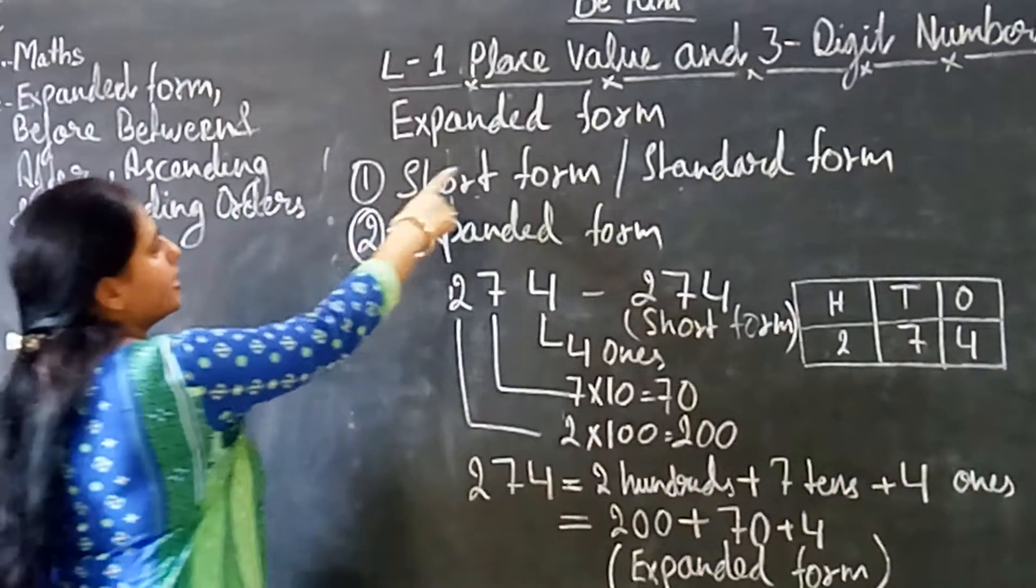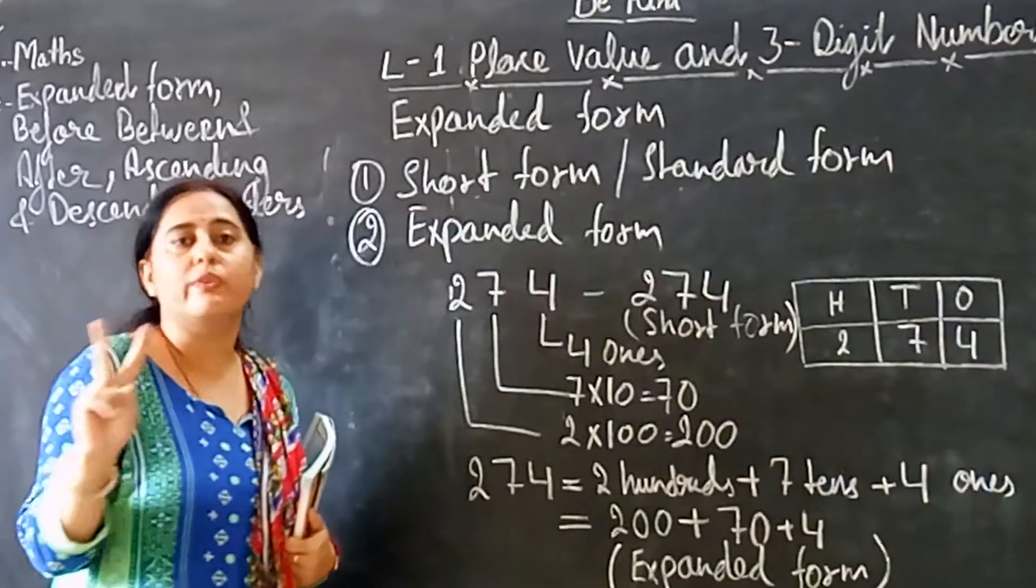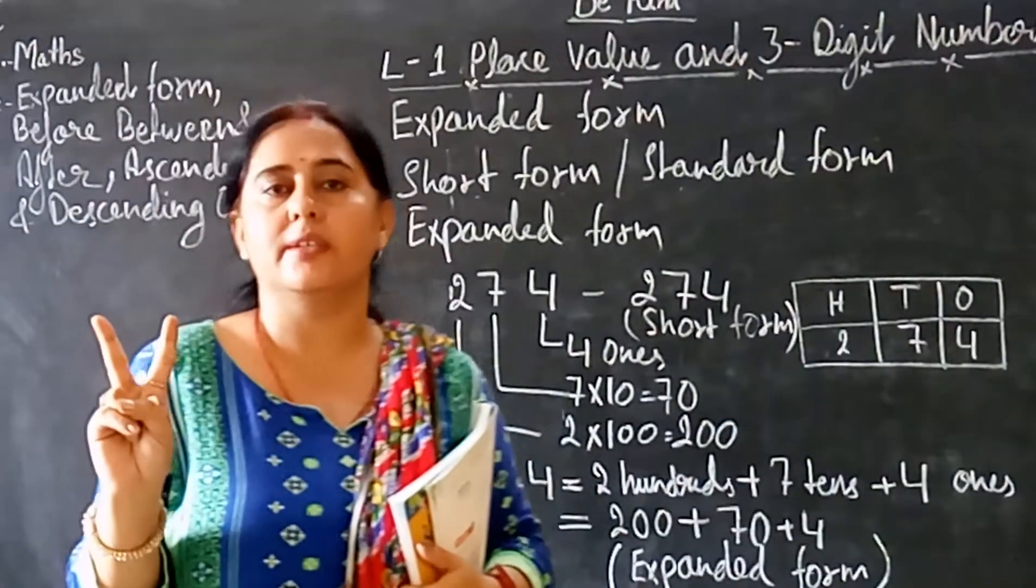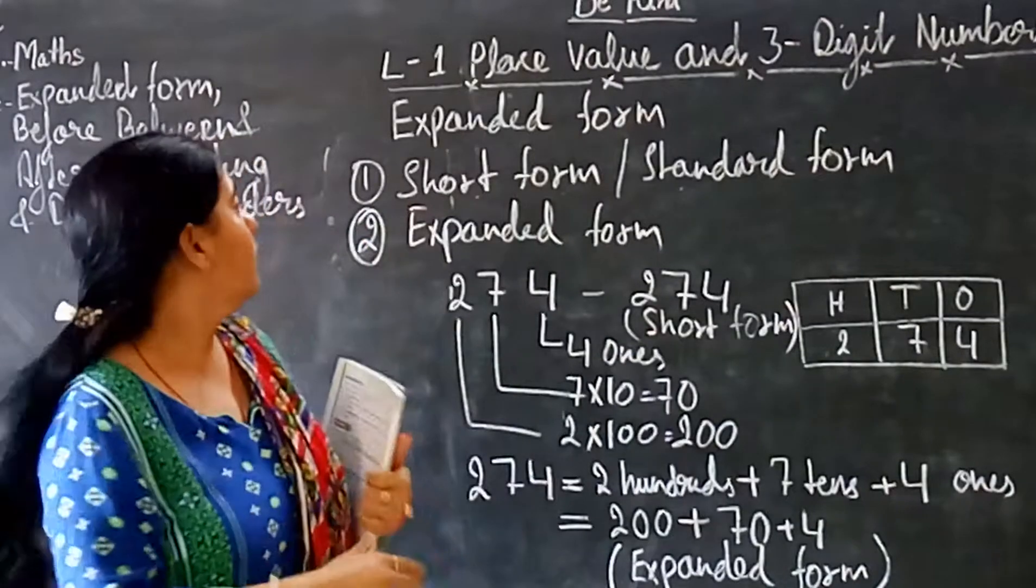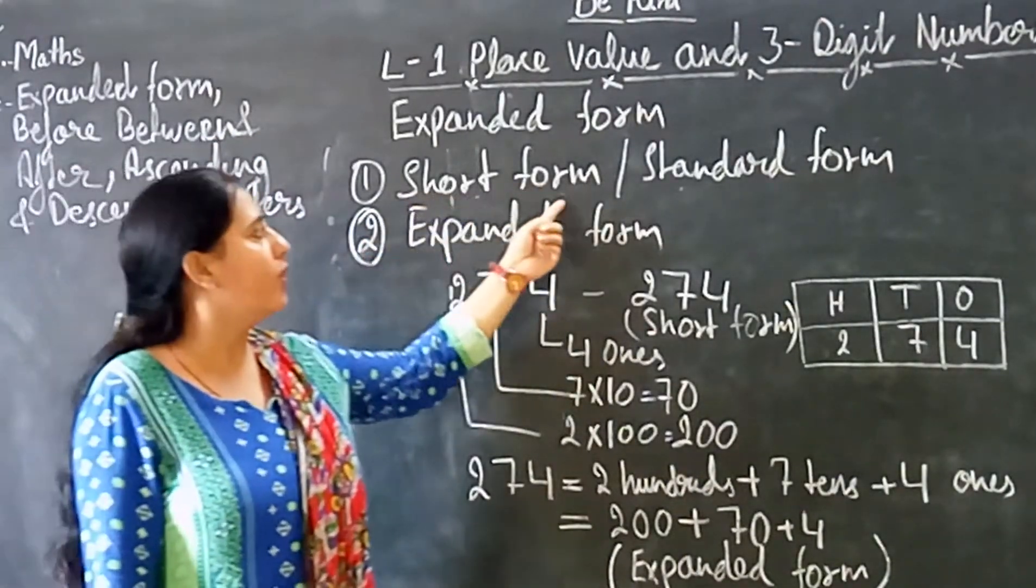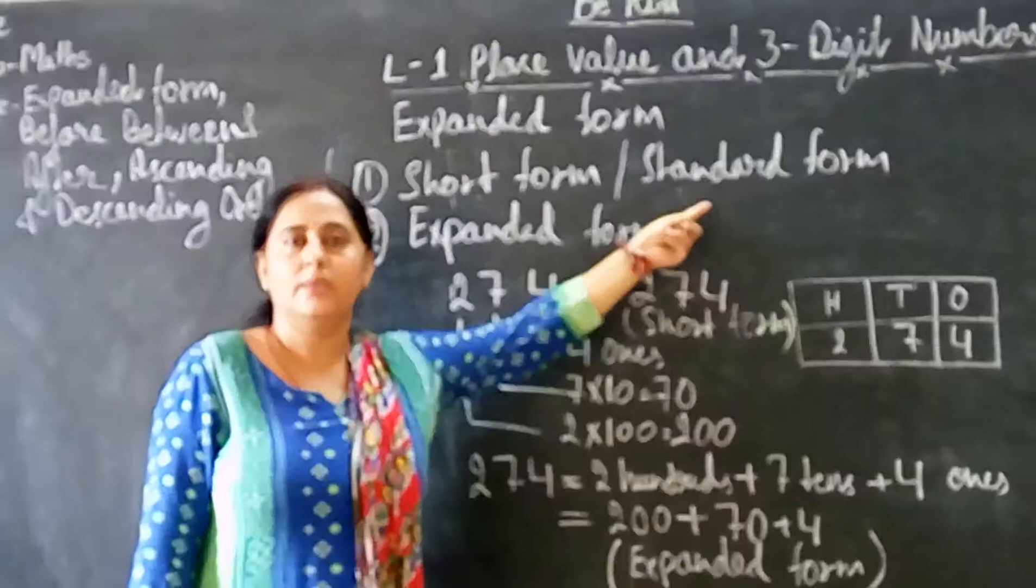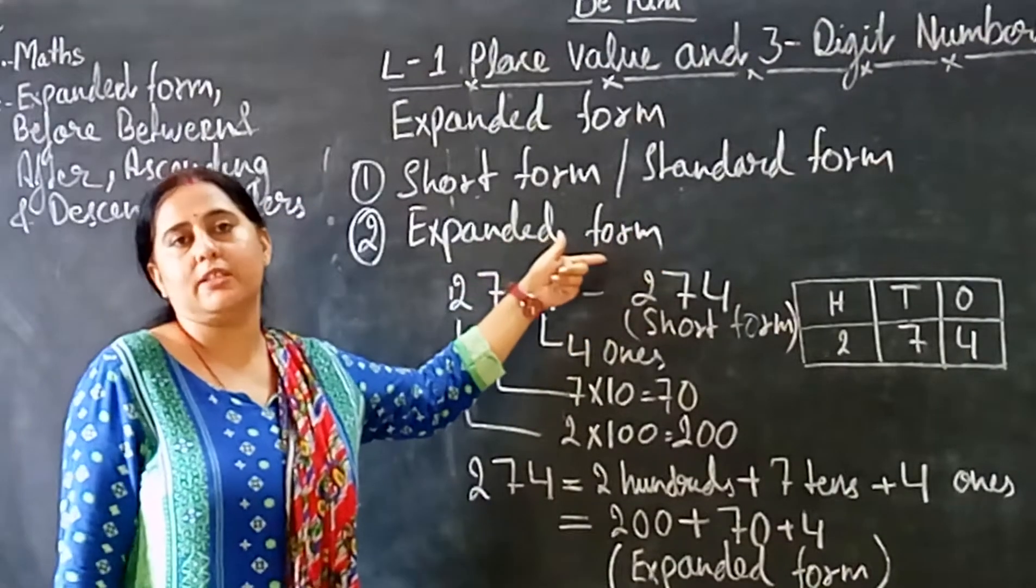Now what do you mean by expanded form? So there are 2 ways to write any number. Kinne tarike hotte hain? Do tarike hotte hain. First one is what we call short form or standard form, and another one is expanded form.